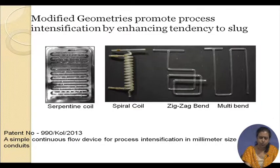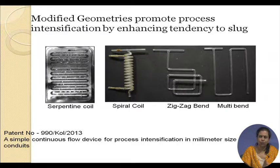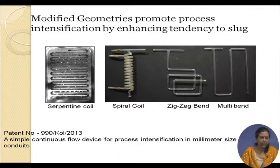Another advantage of slug flow, not directly related to process intensification, is that it is a sort of separated flow pattern — gas slugs, then liquid slugs — making it very easy to separate the two phases after they have flowed through a system. This is particularly important for micro systems because it is very difficult to separate micro emulsions and micro dispersions otherwise.